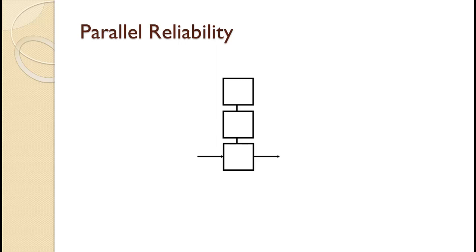With parallel reliability, we have two or more components connected in such a way that at least one of them must function for the product to function.